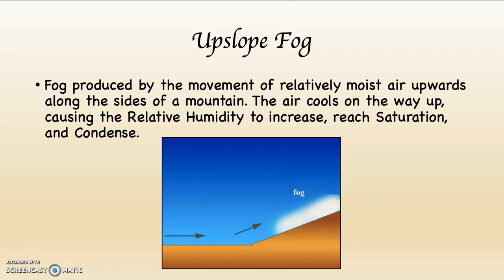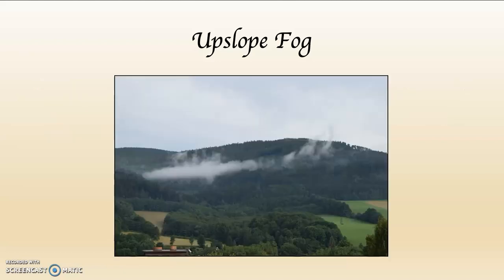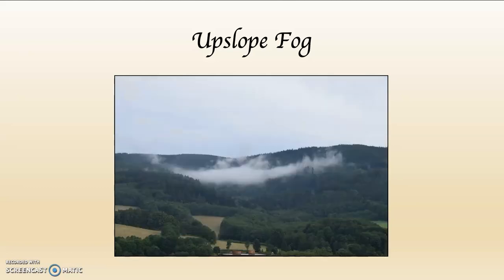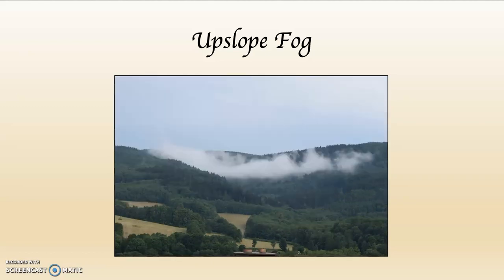Upslope fog is fog produced by the movement of relatively moist air upwards along the sides of a mountain. The air cools on the way up, causing the relative humidity to increase, reach saturation, and condense. This is a place where I used to own a house in the Czech Republic. I was at my friend's guest house. We got up early in the morning, the air started to rise along the sides of the mountain, and an upslope fog began to form. You can see the fog was getting denser and denser.